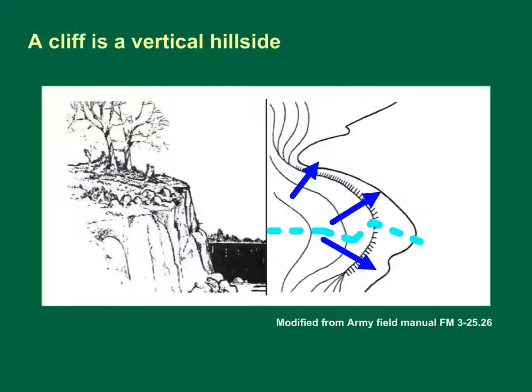A cliff is a vertical or near-vertical feature. The cliff is shown in landscape view on the left and map view on the right. On a map, the contour lines for cliffs are nearly touching, or the contour lines come together to form one contour line depicting the edge of the cliff. Newer maps may also depict a cliff with tick marks — similar to those used for a depression — with tick lines facing downward representing the vertical face. The blue arrows represent potential flow directions.